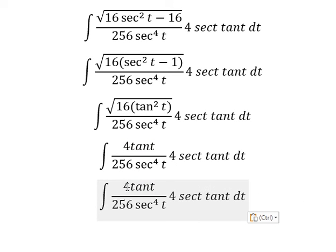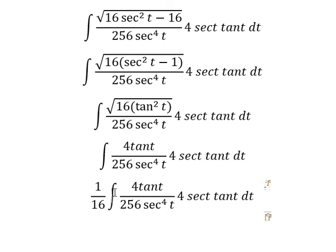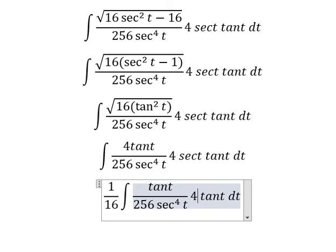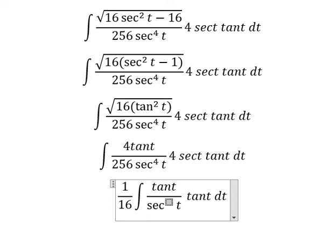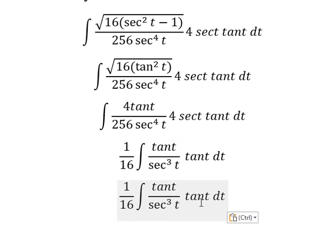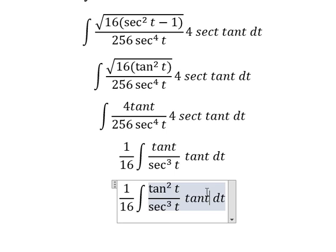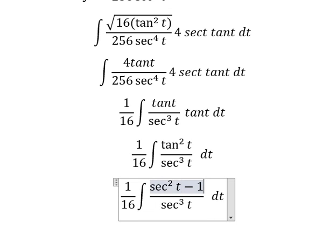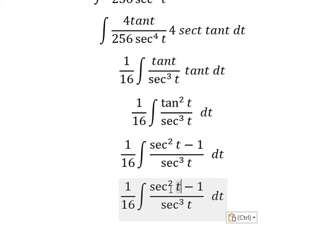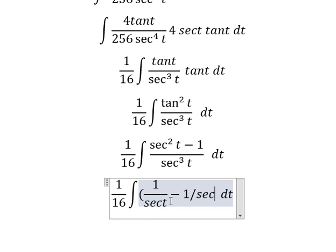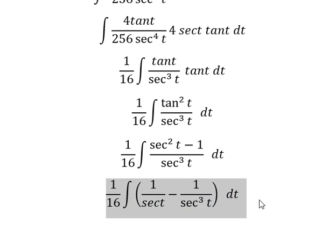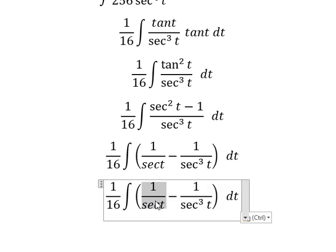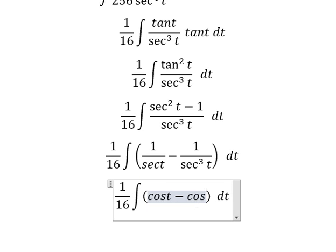Now we simplify: the 4 and 4 sec(t) cancel with other terms, leaving 1 over 16. We have sec³(t), and tan³(t) — where tan²(t) we put as sec²(t) minus 1. Dividing through and substituting 1/sec(t) as cos(t), we get cos³(t).